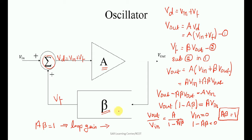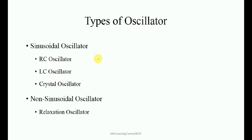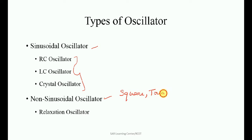In an oscillator, the feedback circuit is used as a frequency-selecting circuit, made up of R and C, or L and C. Otherwise, quartz crystals are used in the feedback circuit to select the desired frequency. Based on this, oscillators are classified into two types: sinusoidal and non-sinusoidal. Sinusoidal types include the RC oscillator, LC oscillator, and crystal oscillator — these produce sine wave signals. Non-sinusoidal oscillators produce square wave and triangular signals, and are called relaxation oscillators, which can be built using an operational amplifier or a 555 timer IC.